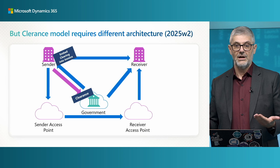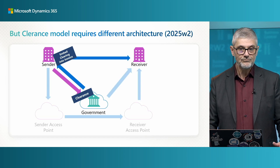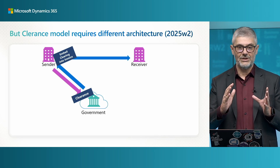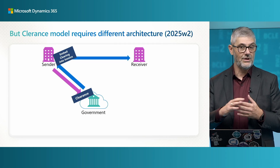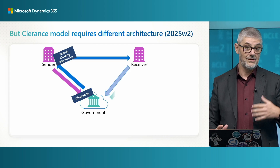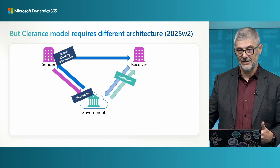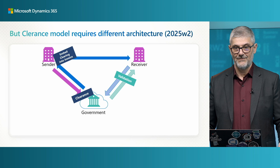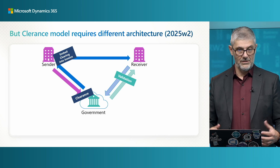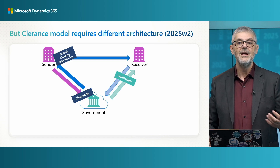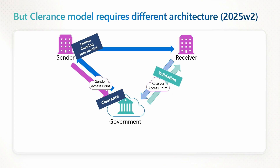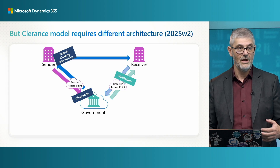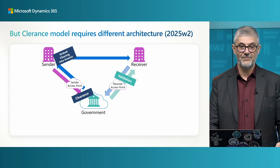The path varies from country to country in terms of what is required, but you have all these options available. This is mainly what the clearance model means: send your invoice to government to clear it, get it back with embedded clearance data, then send to your receiver by any model you want. One more feature will exist in this model in the future — validation as a receiver — to fully support the clearance model. Currently, it supports both sender access point and receiver access point.